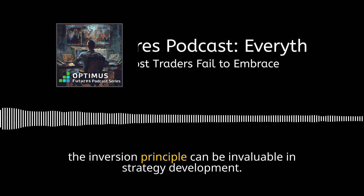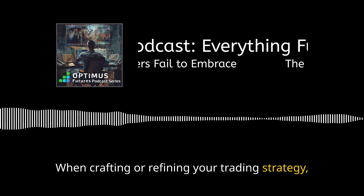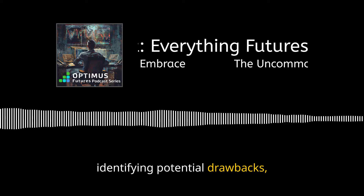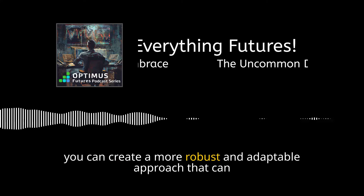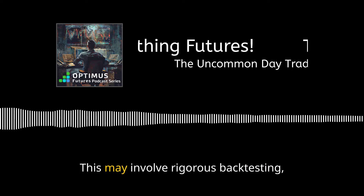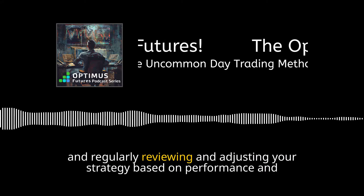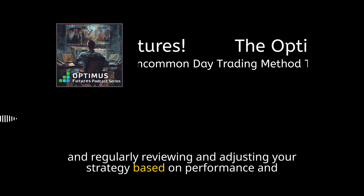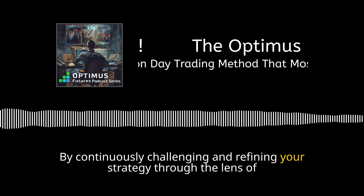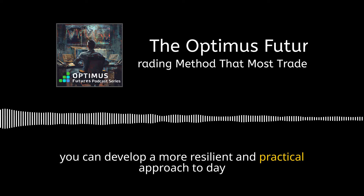Finally, the inversion principle can be invaluable in strategy development. When crafting or refining your trading strategy, ask yourself, 'What flaws or weaknesses could cause this strategy to fail?' By identifying potential drawbacks, you can create a more robust and adaptable approach that can withstand various market conditions. This may involve rigorous backtesting, setting clear entry and exit point rules, and regularly reviewing and adjusting your strategy based on performance and market changes.